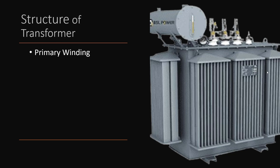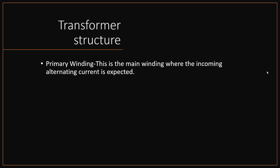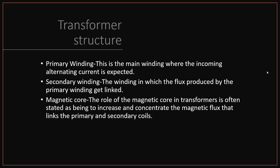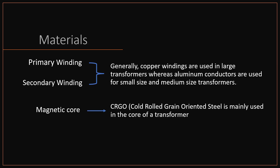Every transformer has three parts: primary winding, secondary winding, and magnetic core. Primary winding is the main winding where the incoming alternating current is received — the AC supply from a generator or power station comes into the primary winding. Secondary winding is the output side. The function of the magnetic core is to increase or concentrate the magnetic flux that links the primary and secondary coils. The magnetic core is an iron core. For large transformers, primary winding is made of copper; for small and medium-sized transformers it may be aluminum. The commonly used core material is CRGO — cold-rolled grain-oriented steel.